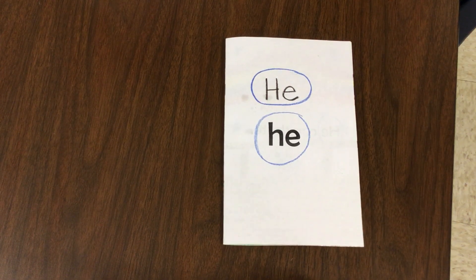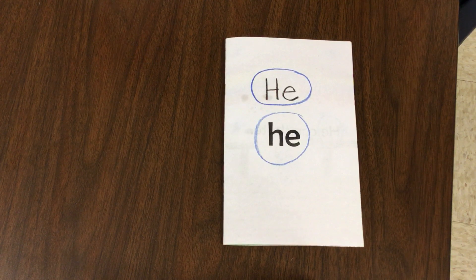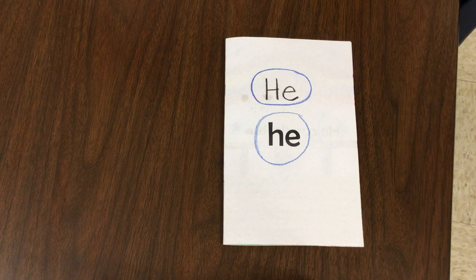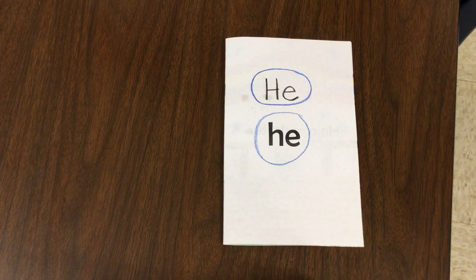Today we're going to learn about the word wall word he. He is a pronoun. It's not a proper noun because we don't know the name of this person. This is a word we use to describe a boy whose name we don't know. He.